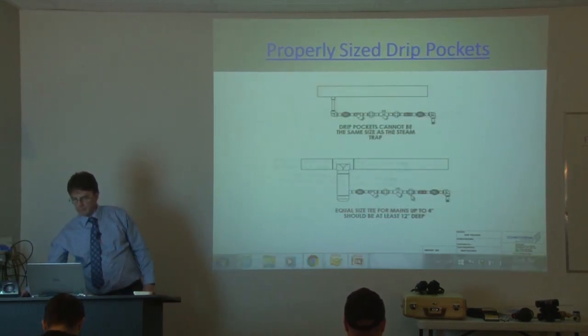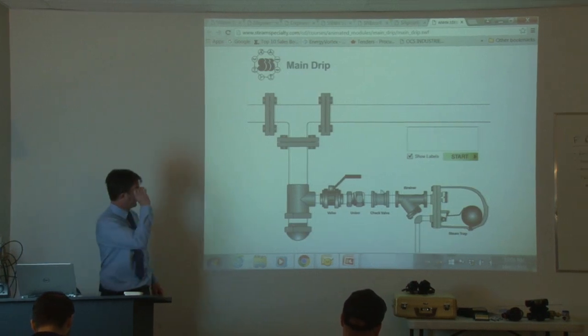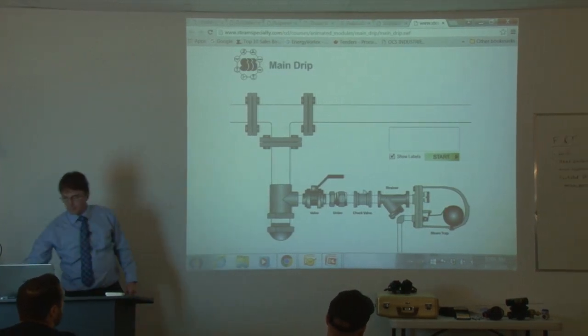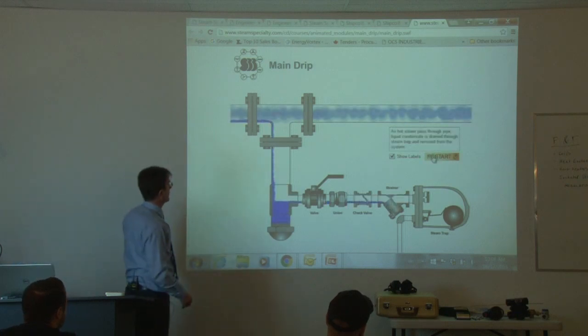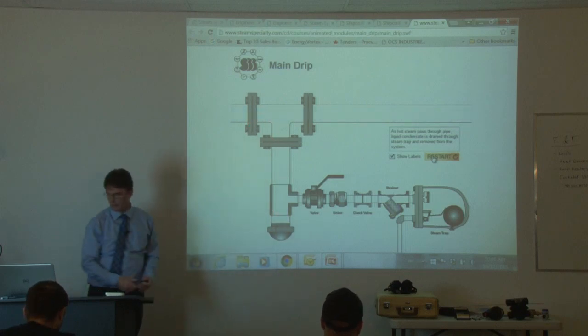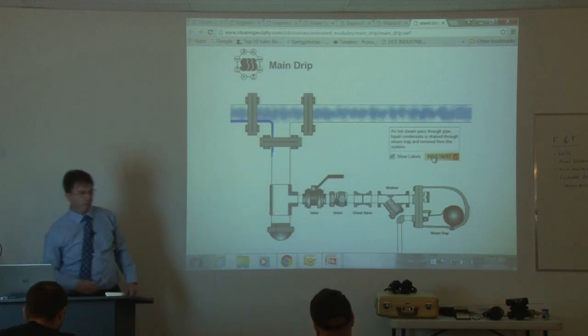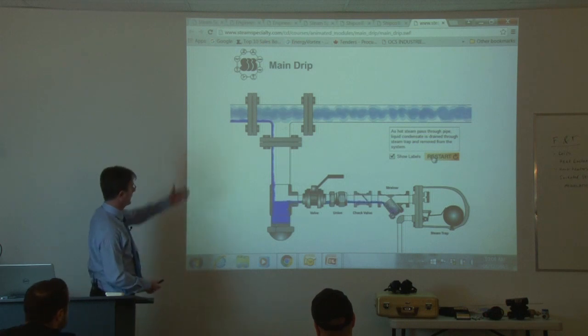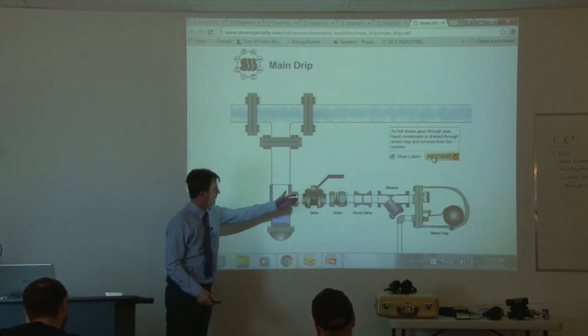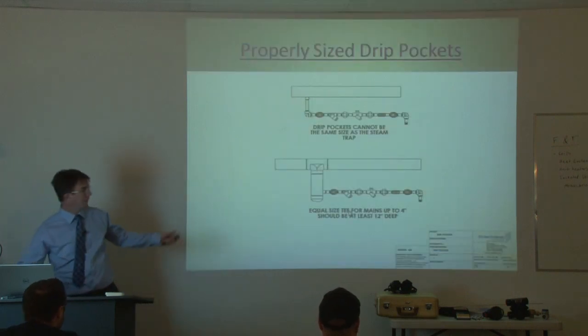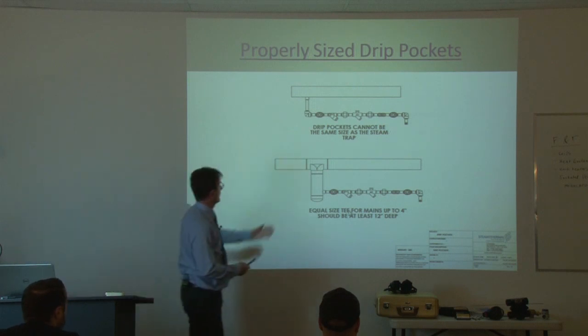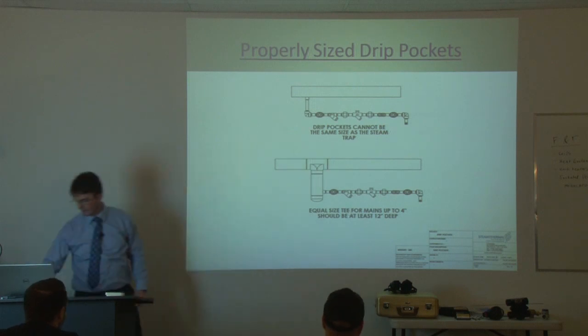So this is another link back to our website. And it shows you graphically why for pipe sizes up to 4 inch, we like to see equal size drip pockets. So having a big enough opening allows the condensate to, went by pretty fast, it allows the condensate to collect and helps the trap operate. Because otherwise, the condensate will just fly over top. So that's why when I'm doing these trap audits, I'm looking for things like this. Just best piping practices.